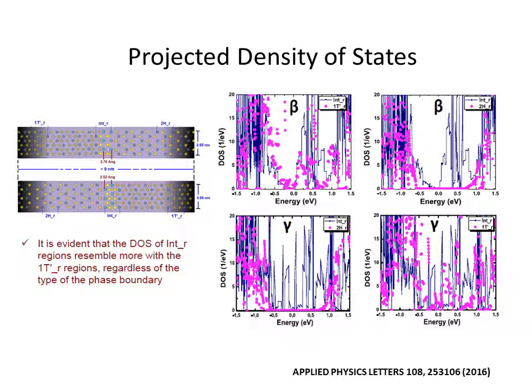It is evident from the projected density of states plots that the DOS of interfacing regions resemble more with the 1T' regions, regardless of the type of the phase boundary.